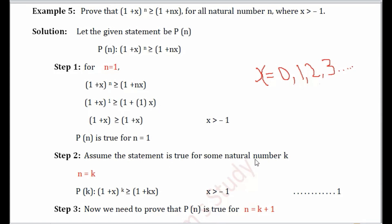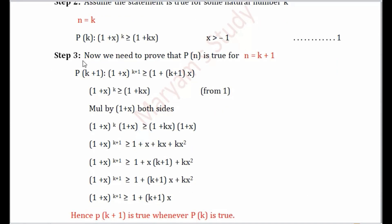In Step 2, we assume the statement is true for some other natural number k. We replace all n by k, giving P(k): (1+x)^k ≥ 1+kx, where x > -1. We label this inequality as (1), since we will use it in Step 3.